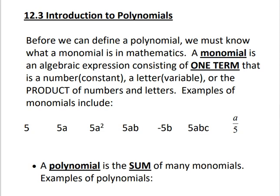A monomial is an algebraic expression consisting of one term that is either a number, which we call a constant, a letter, which is also called a variable, or the product, which means we multiply the numbers and the letters.